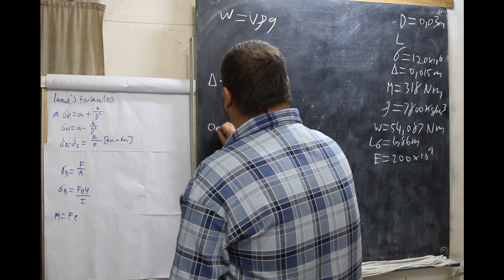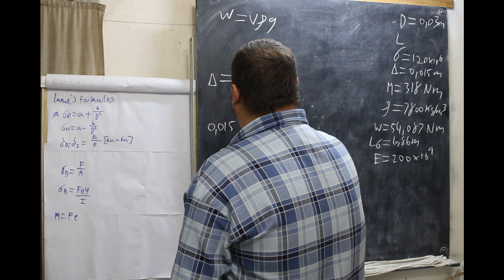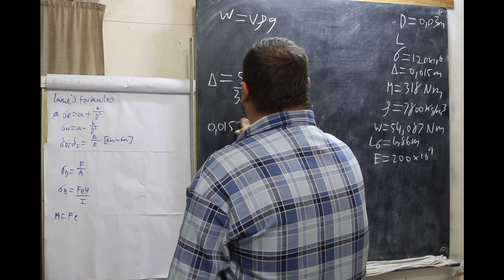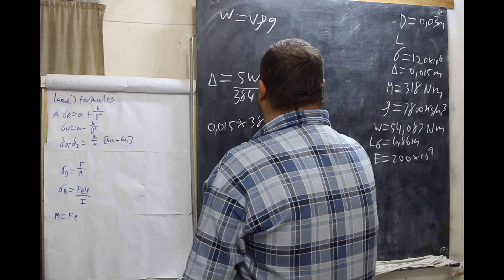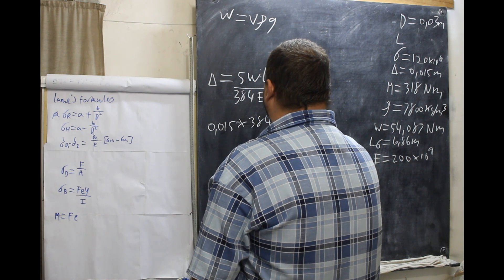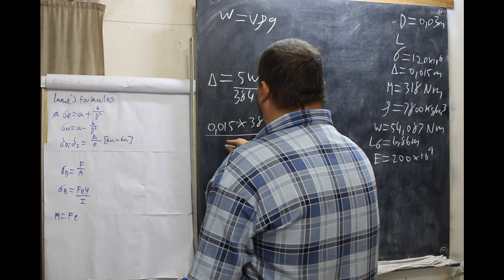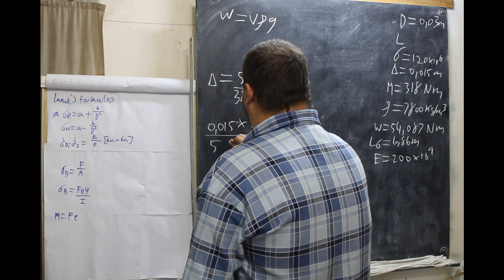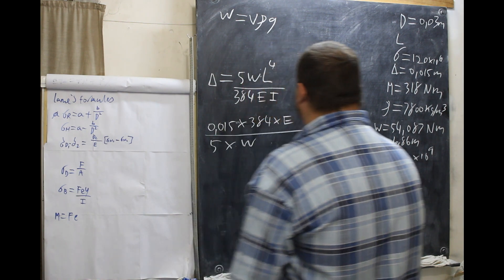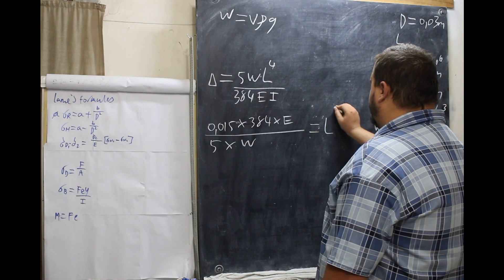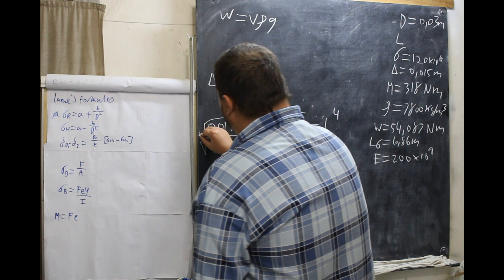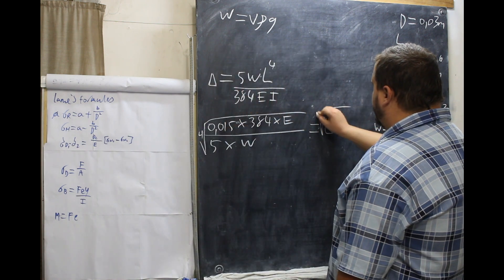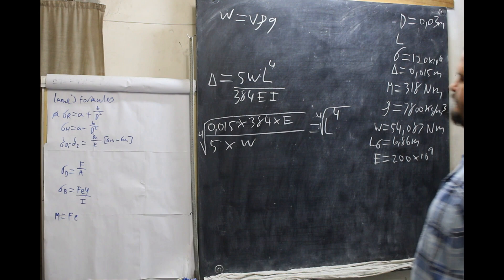So, our deflection is 0.015 times 384 times E all over 5 times W. 0.015 equals L to the power of 4, root 4. And then we get L.